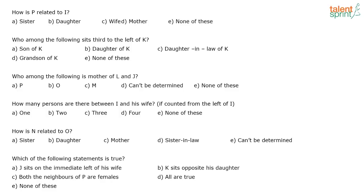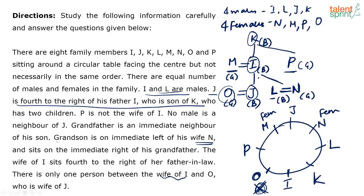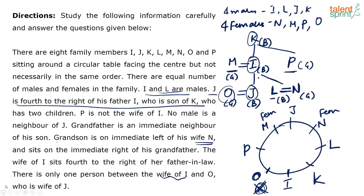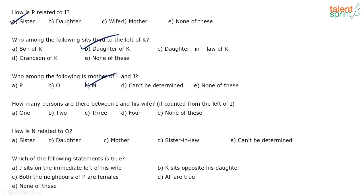Now let's look at the questions. How is P related to I? P is I's sister. Who sits third to the left of K? Counting 1, 2, 3 — P sits third to the left of K, and P is the daughter of K. Who is the mother of L and J? M is the mother of L and J. How many persons are between I and his wife? Two persons. How is N related to O? N and O are sisters-in-law.